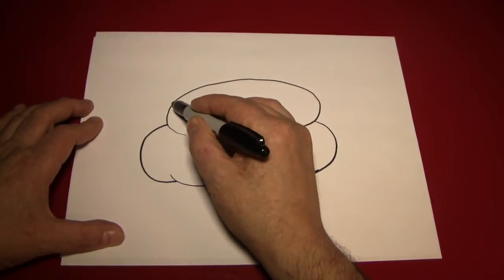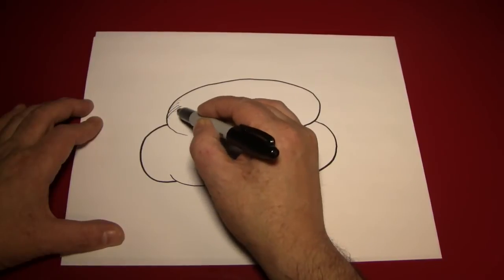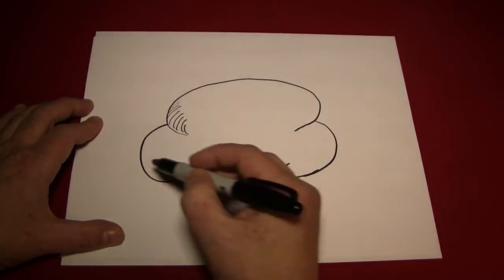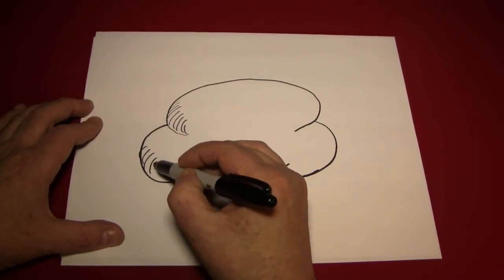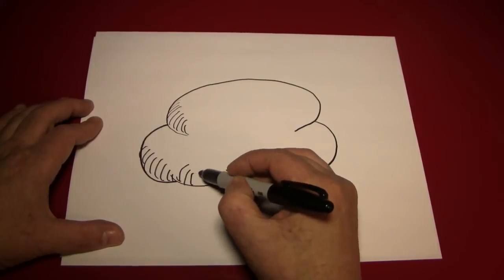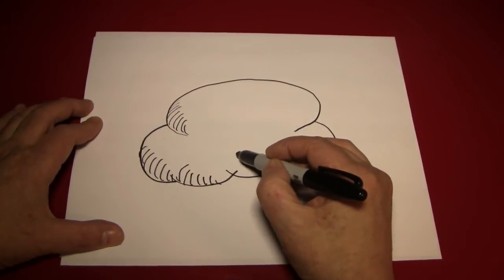So we'll start here and you see we'll just make little hash marks like that. Do the same thing over here. Over here.